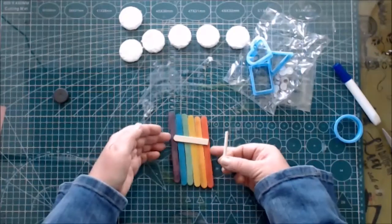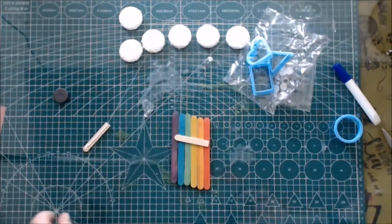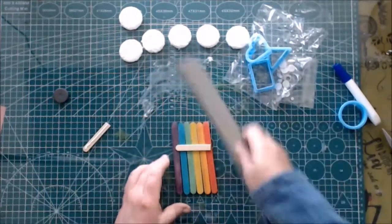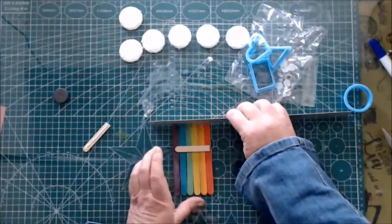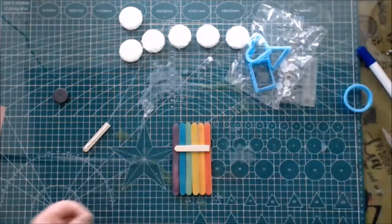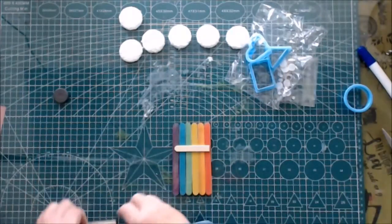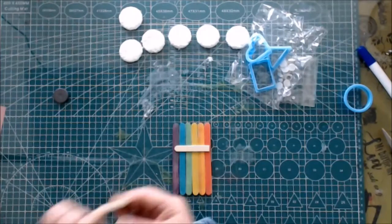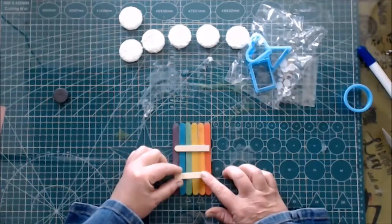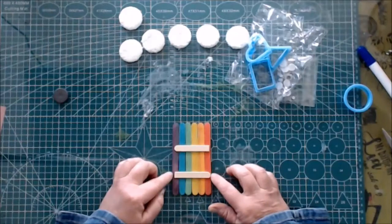You see what I mean? The sleeve of my jacket touched these popsicle sticks and everything went skew. So I am just going to take my ruler and make sure that everything is back in line. And then we are going to glue the bottom stick onto the rainbow sticks.